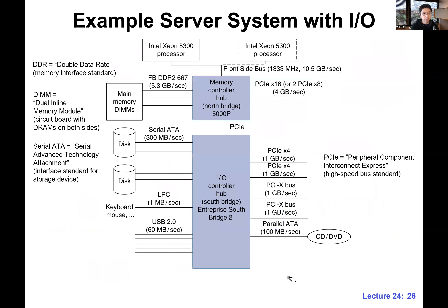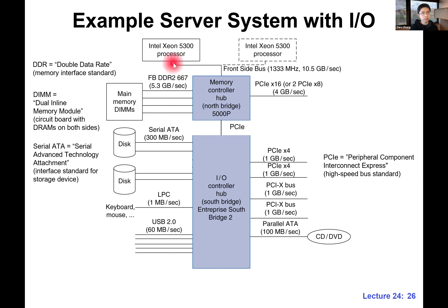Here is an example system — a complete computer system. This is not the most recent one, but it's a very good template and representative system. We have two processor slots here; we're using one — this is an Intel Xeon processor, a server chip. This one is connected to the main memory.